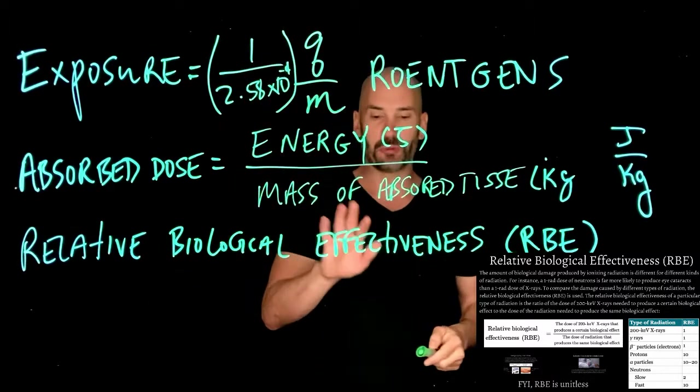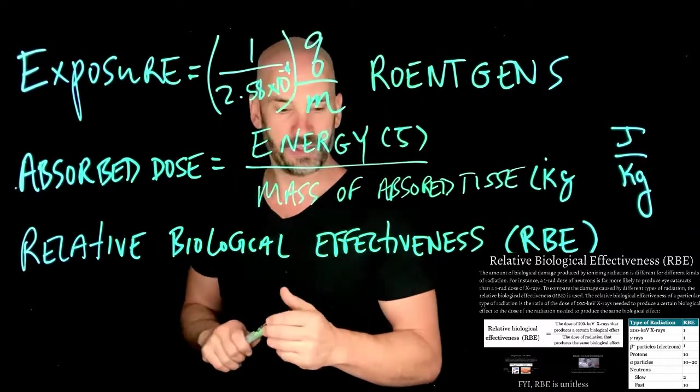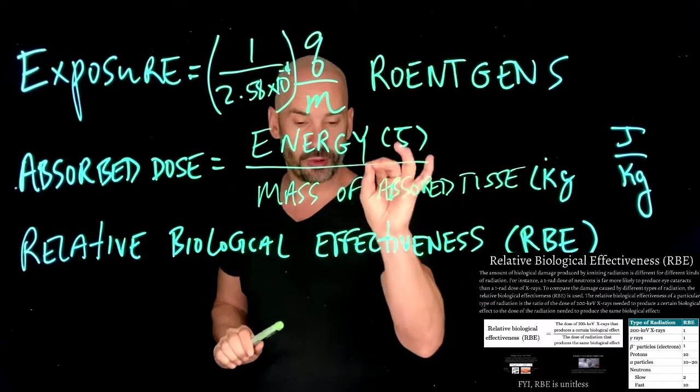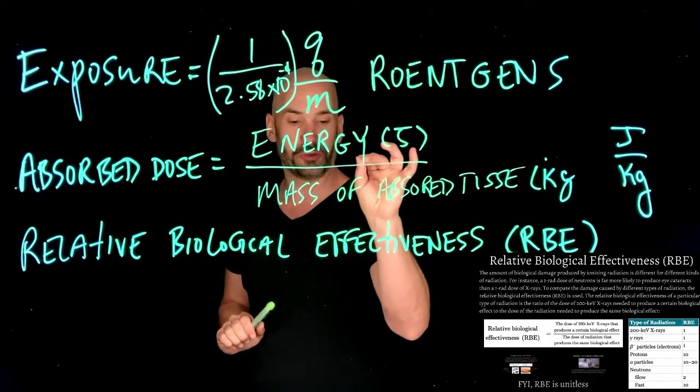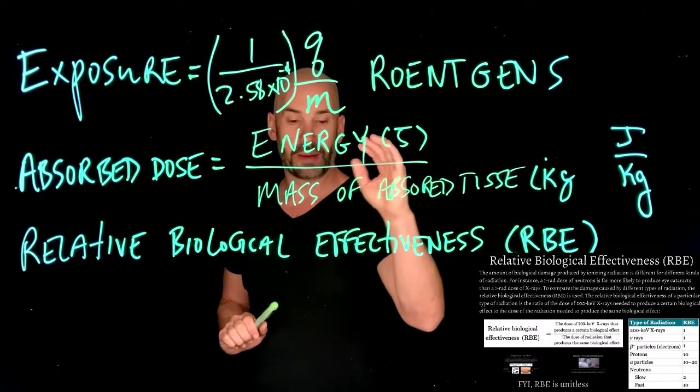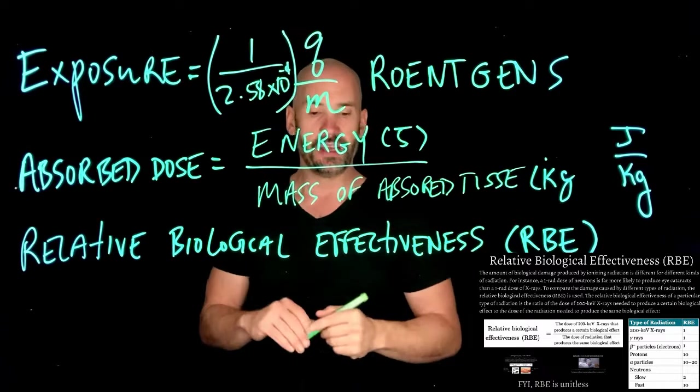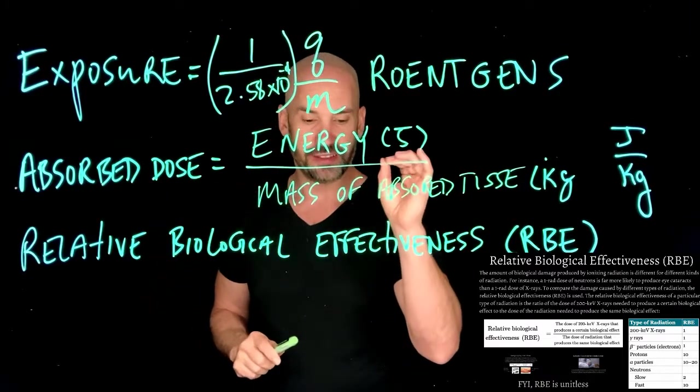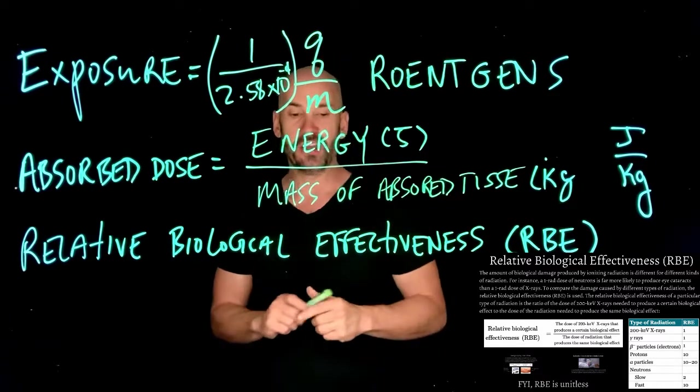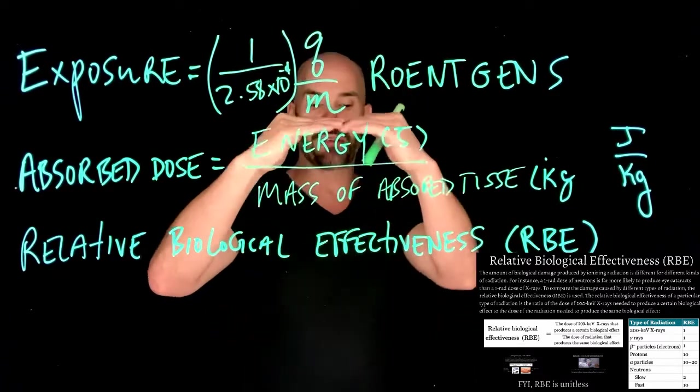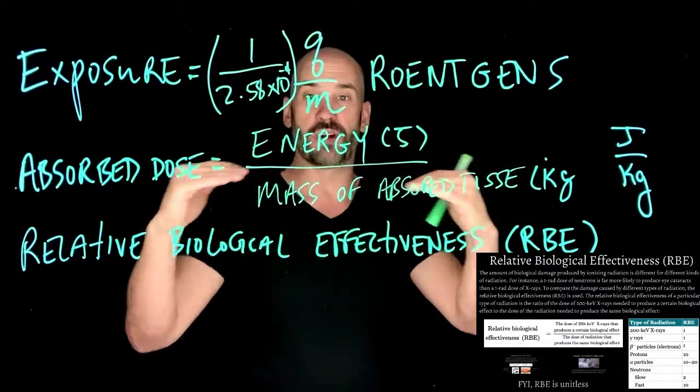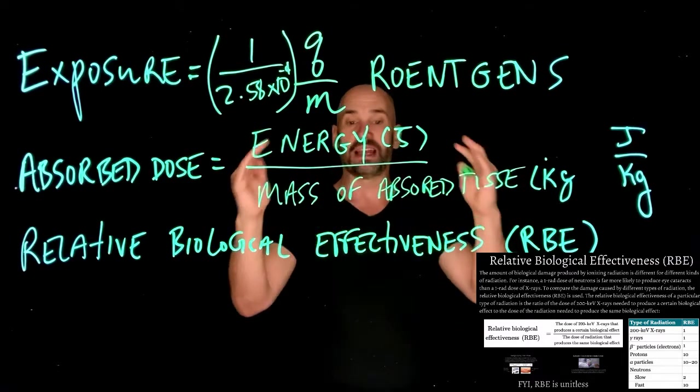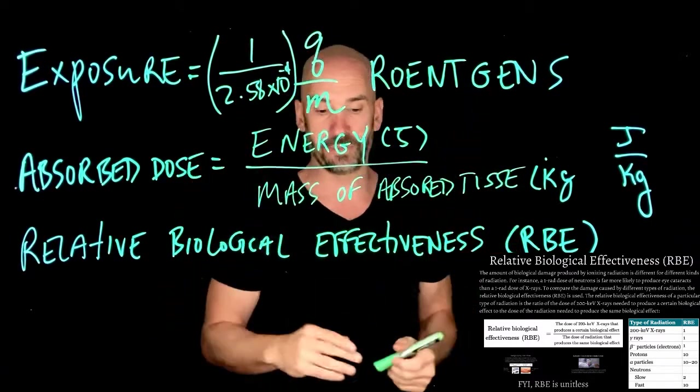The relative biological effectiveness is the dose of 200 kilo electron volts of x-rays that produces a certain biological effect, like cataracts, over the dose of radiation that produces the same biological effect. They're using x-rays here as a standard to compare all other types of radiation, a way of creating a normalized scale to compare different types of radiation and the effects on the body.